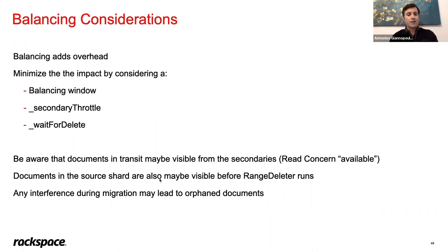Be aware that documents in transit may be visible from secondaries depending on your read concern. If something fails during migration or cleanup, those documents become orphaned — MongoDB's term for them. The cluster doesn't log these separately; they simply remain, taking up space. With certain read concerns, secondaries may serve these orphaned documents to your driver.